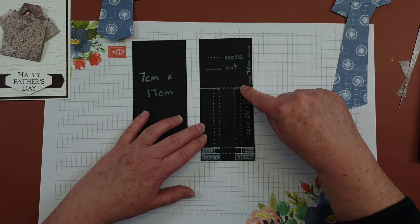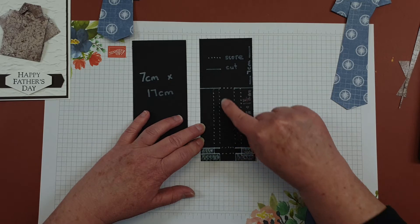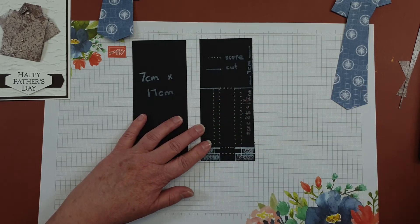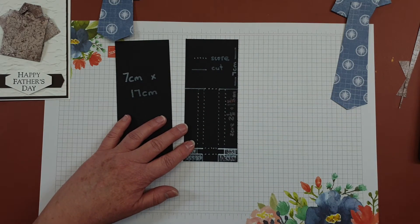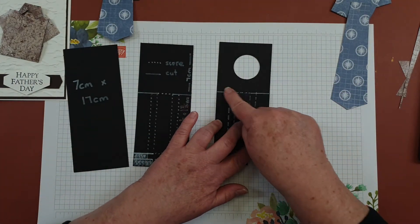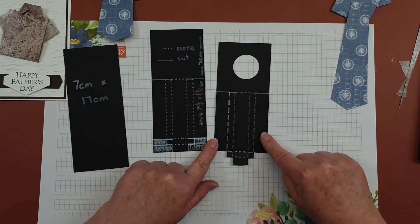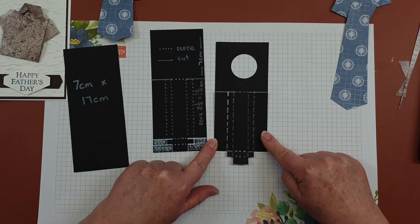Once you have done that, you will then cut just along this top line here and cut out this little extra bit that you can see here, so it's now looking like that.